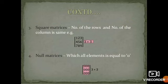Square matrices: the number of rows and number of columns is the same. For example, the row of the matrix is 3 and column of the matrix is 3. The order of the matrix is 3 by 3. This matrix is called a square matrix.